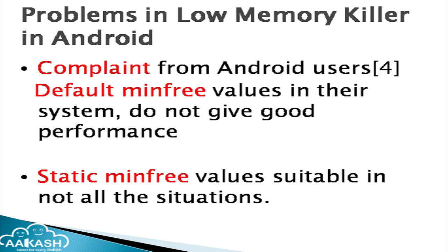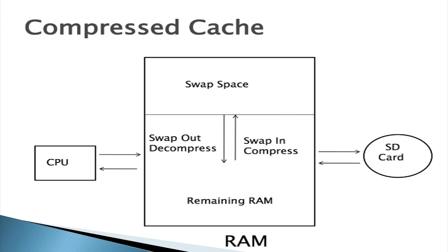Keeping static mean free thresholds the same all the time may not be good — this is a theoretical assumption that can be proven through practical work. One more ongoing project is compressed cache. Android does not have any swap space due to the limitations of flash memory. This project focuses on implementing swap space inside the RAM: whenever a page needs to be swapped, it is compressed and placed into this swap space, and when needed again, it is decompressed and loaded.